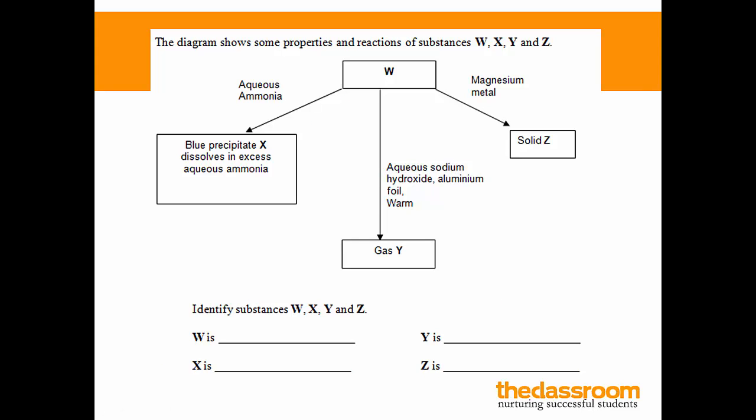Now here you have 4 unknown substances, W, X, Y and Z. Same thing, we're just going to start with W and we're going to go down the arrow on the left. Now, I'm going to repeat myself again. The addition of ammonia or sodium hydroxide is used to test for the cation. So we're trying to find out here what cation is present in W.